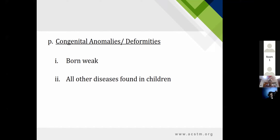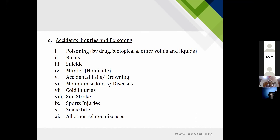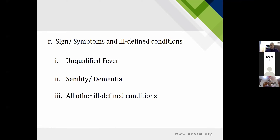Congenital anomalies and deformities are also present. Studies show 30 to 40 percent stunted growth in some rural areas of the region, along with various childhood diseases. Accidents, injuries, and poisoning — including drug poisoning, biological materials, burns, suicide, homicidal murders, accidental falls, drowning, mountain sickness (Pakistan has six or seven of the world's biggest mountains), cord injuries, sunstroke, sports injuries, snake bites, scorpion bites. There are also ill-defined conditions such as unqualified fever of unknown cause, senility or dementia.